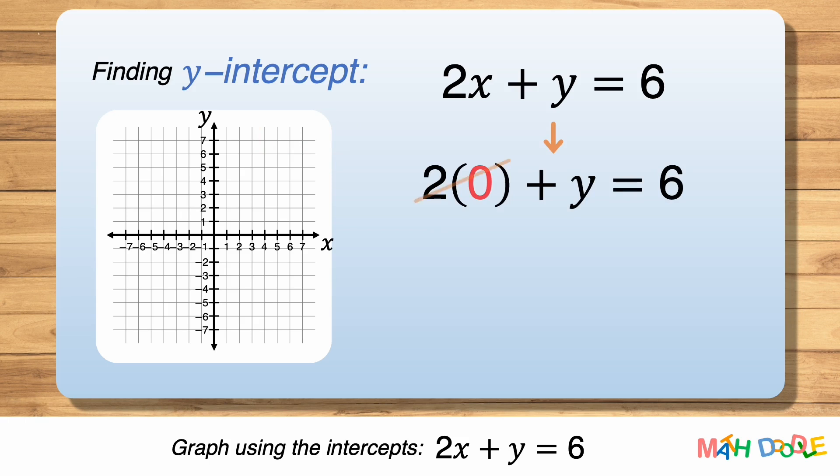2 times 0 is 0, and the equation becomes y equals 6. So when x is 0, y is 6. This tells us that the line has a y-intercept (0, 6), where the line crosses the y-axis.